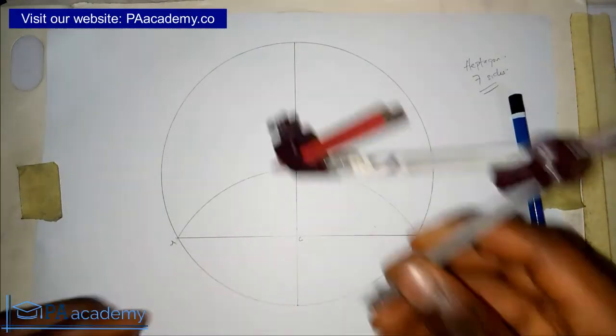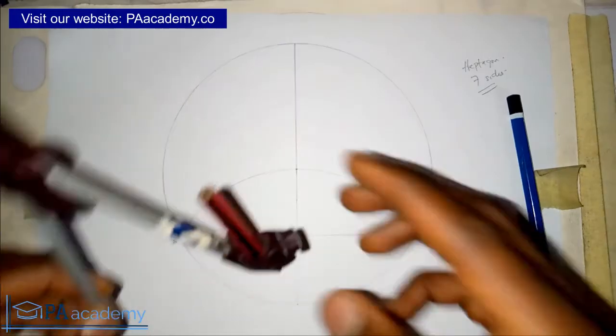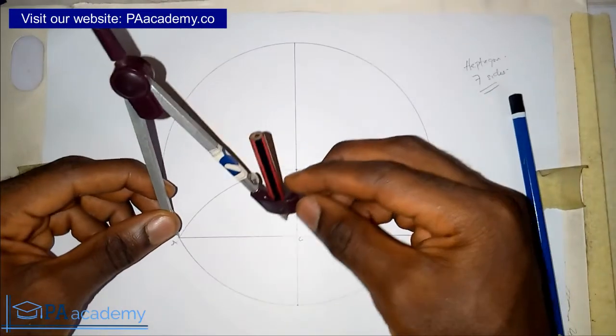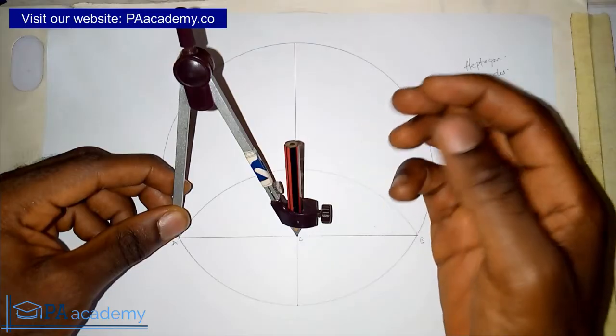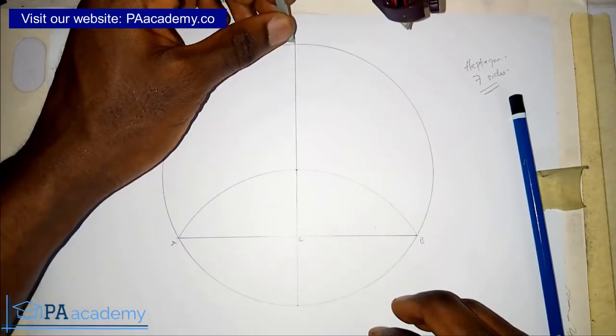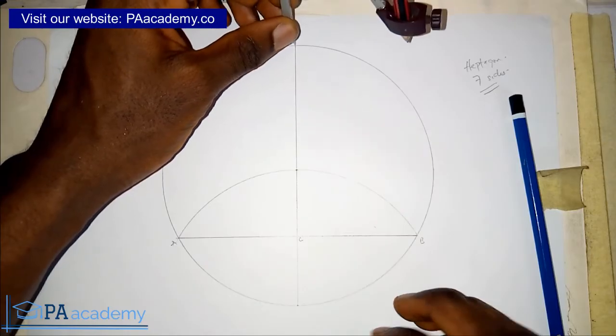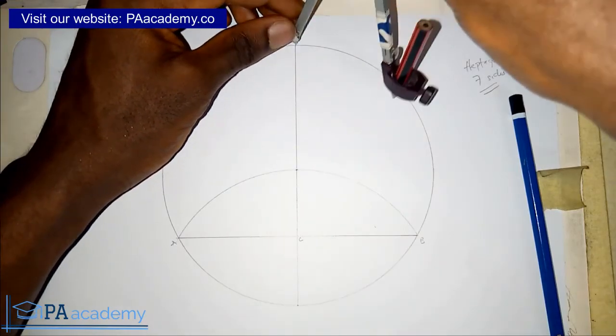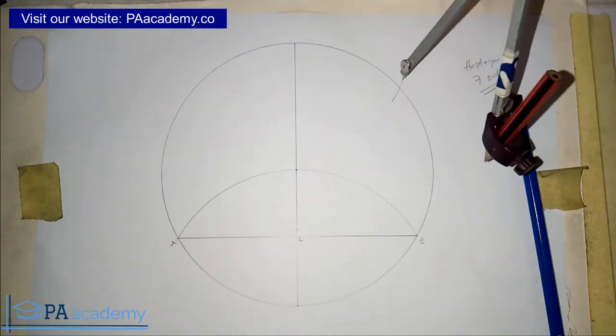Now we bring in our compass again and use it to measure the length of AC. This is the length of AC. We can bring it at the top on this point and then we start to draw an arc on the circumference of the circle like this.